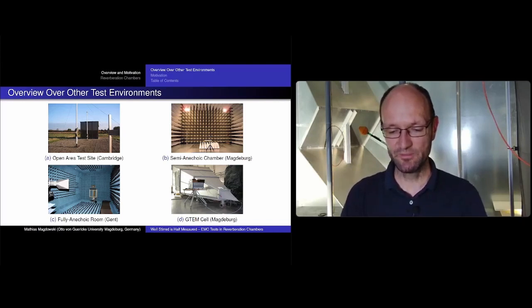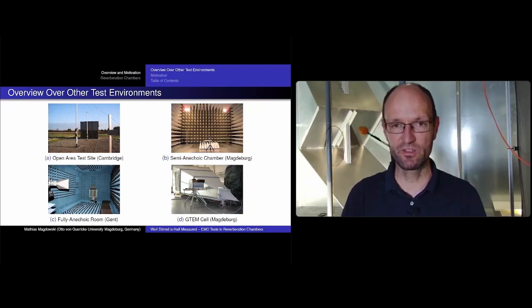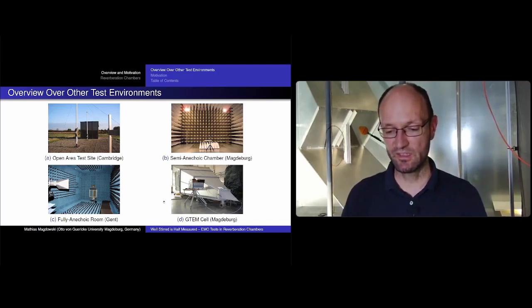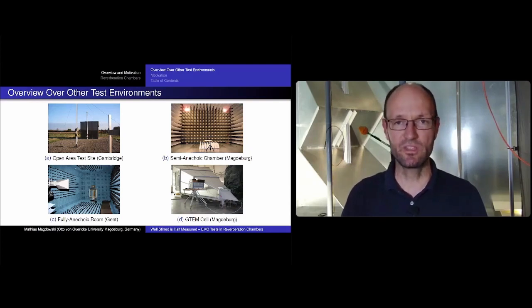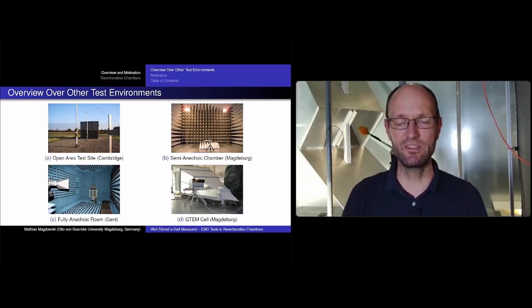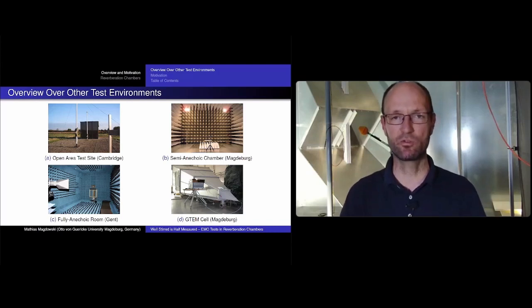There are also fully anechoic rooms — this picture is from Ghent University. They're typically used for antenna measurements and for EMC measurements above one gigahertz. Then there are TEM cells and GTEM cells; we also have a large one in Magdeburg. The common thing with all these test environments is that they measure in a directive way — you put your EUT and measure what it radiates in a certain direction, and you can also radiate onto it from a certain direction for immunity tests.